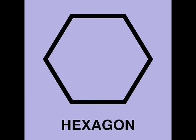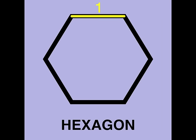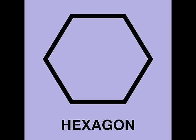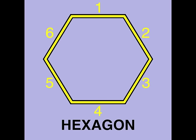A hexagon is a shape that has six sides. It is a polygon made up of six connecting lines.